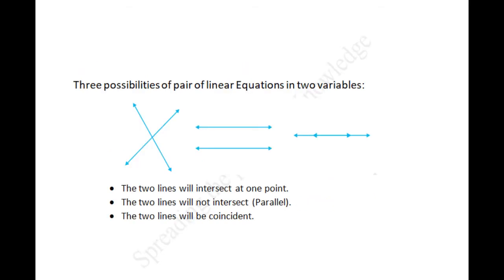We have already seen that the geometrical representation of a linear equation in two variables is a straight line. Similarly, a pair of linear equations in two variables will be two straight lines, both considered together. Therefore, only one of three possibilities can happen: the two lines will intersect at one point; the two lines will not intersect, that is, they are parallel; or the two lines will be coincident.